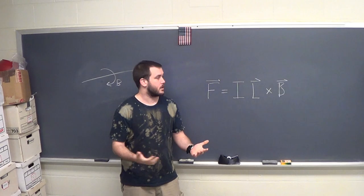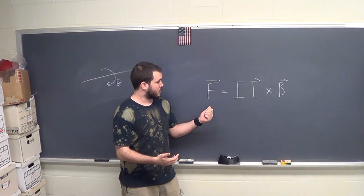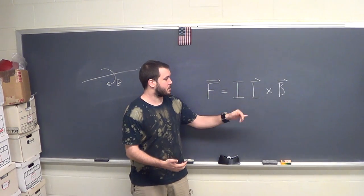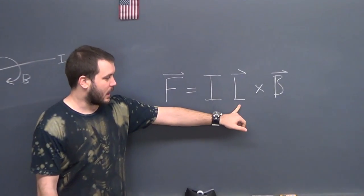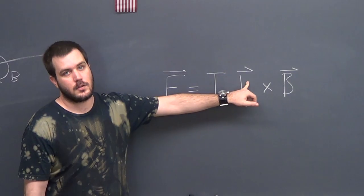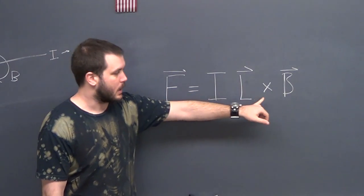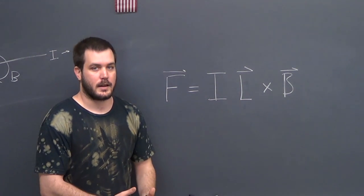And we're going to use the equation, the force is equal to IL cross B, where I is the current traveling down the wire, L is the length of the wire, and it also contains which direction the current is flowing, and B is obviously the magnetic field.